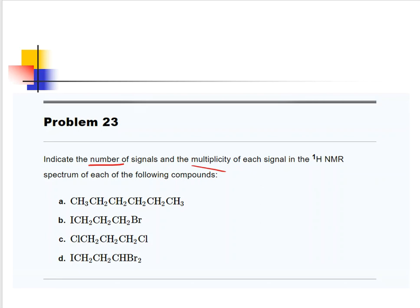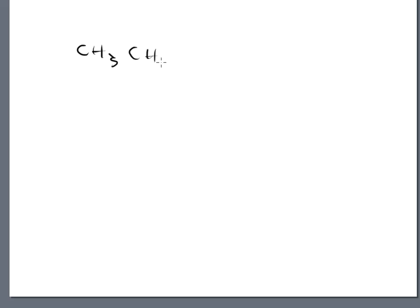So I left you with four example problems, and here they are: A, B, C, and D. It says give me the number of signals and talk about the multiplicity in each one. So keep in mind, we are building and using our words, so we want to make sure that we use proper terminology when we describe these. So the structure is CH3, CH2, CH2, CH2, CH2, CH2, and CH3. That's the structure that they gave us.